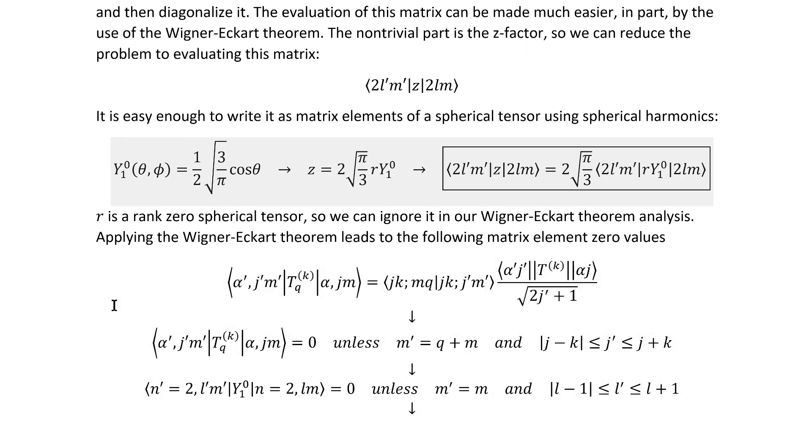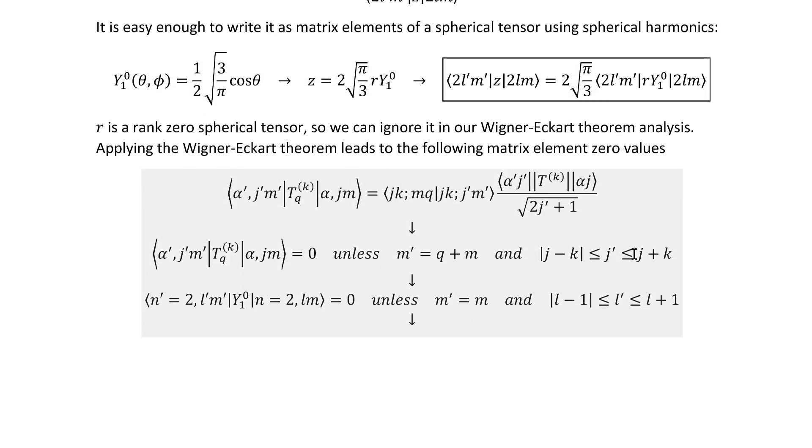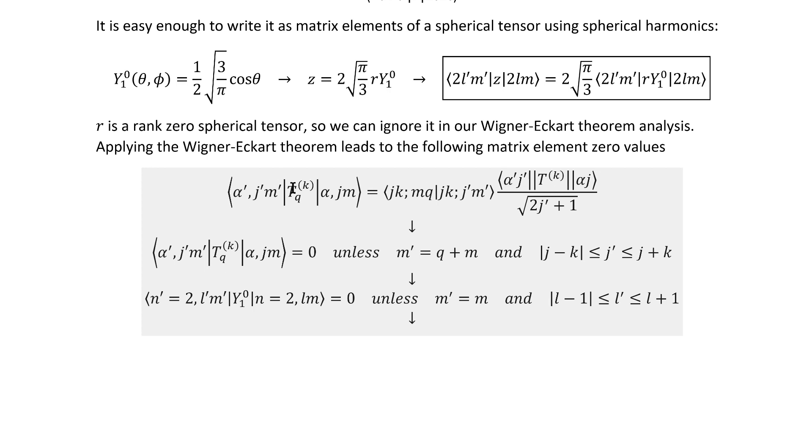R is a rank zero spherical tensor, so we can ignore it in our Wigner-Eckart theorem analysis. Of course, we'll have to re-include it when we get to the point of actually doing integrals, because such a factor of R definitely will change things. This is our usual Wigner-Eckart theorem statement, and these are the selection rules that come out of it.